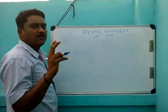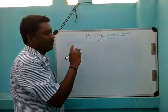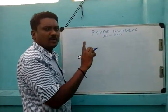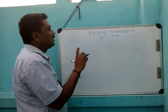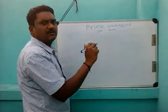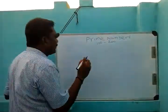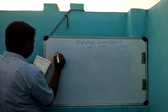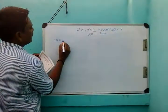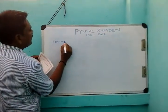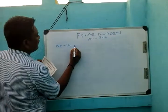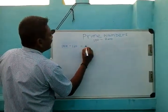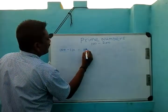Let's see how we find prime numbers. If we take numbers up to 100, we can find the prime numbers. For example, between 100 and 200, we can find primes such as 101.